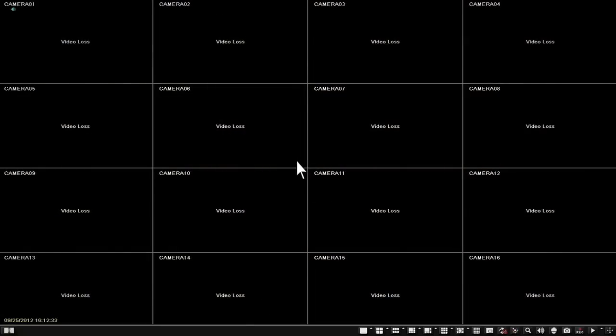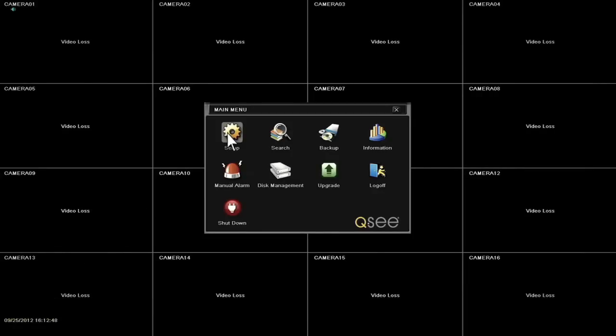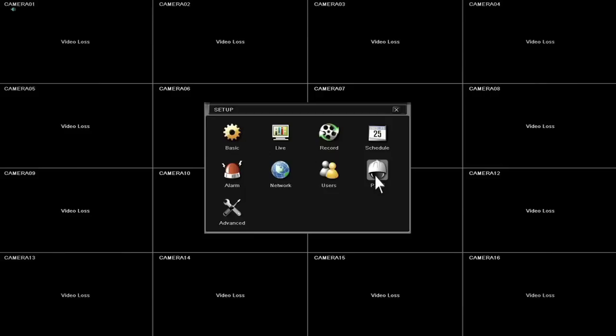right-click anywhere on the screen. A small control bar will appear at the bottom. Click on the menu button, which is the leftmost icon on the bottom and looks like an open book. Then click Setup. Then click the icon labeled PTZ.